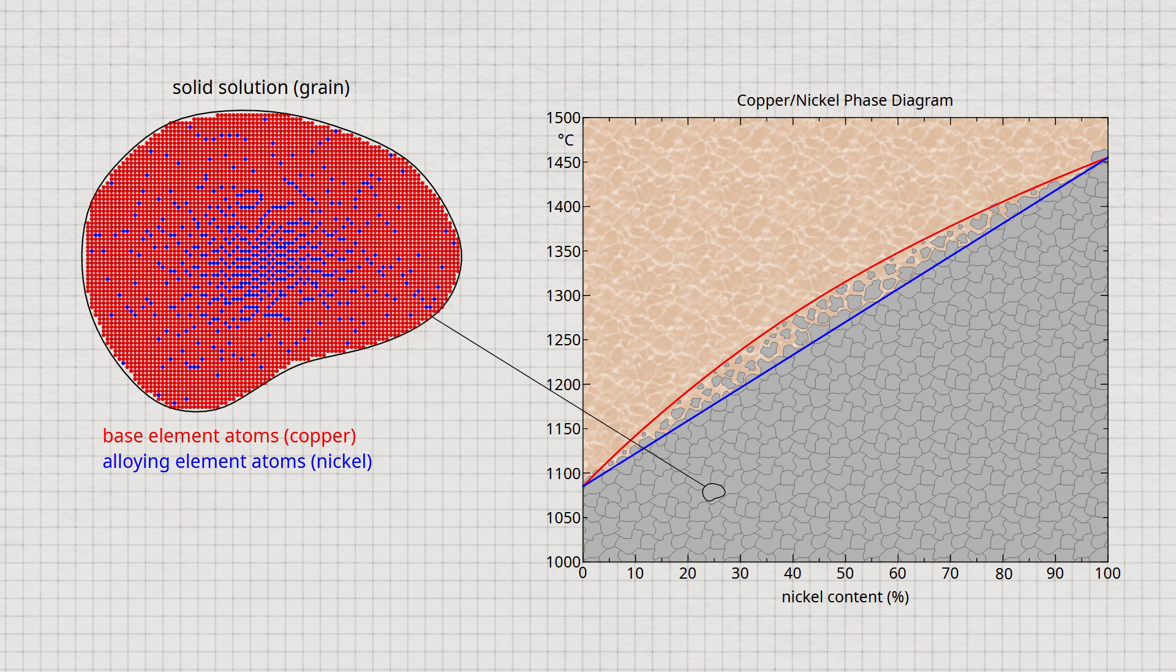Such differences in concentration within a grain are called crystal segregation or microsegregation. Since the alloy concentration has a significant effect on the material properties, the center of the grain will have different properties than the edge region.